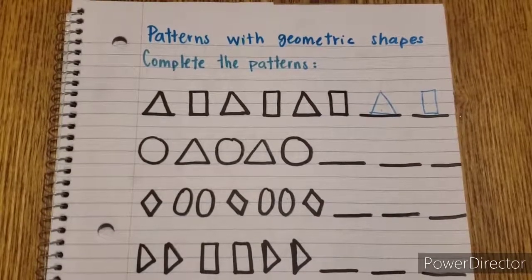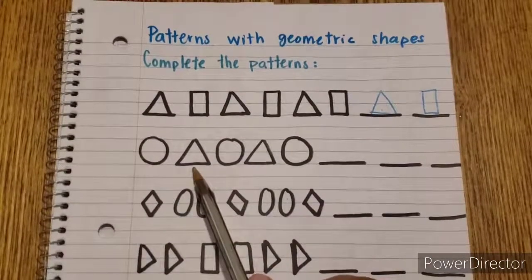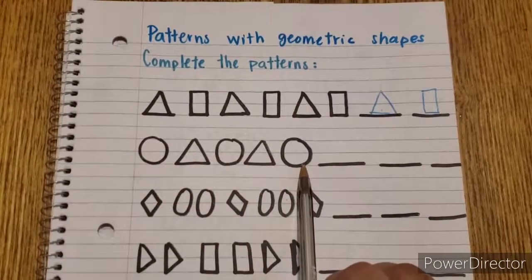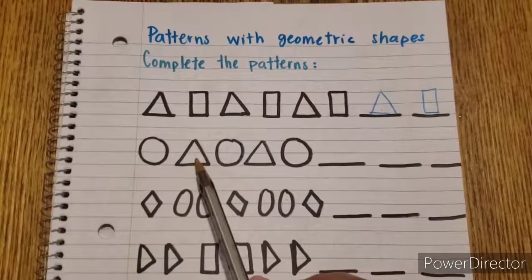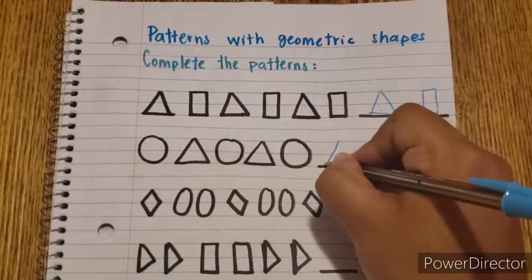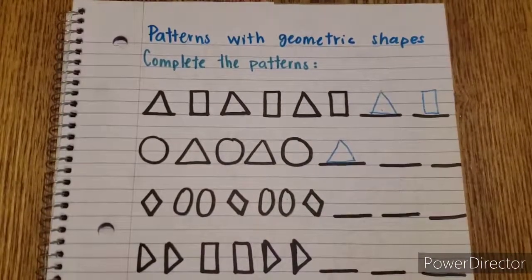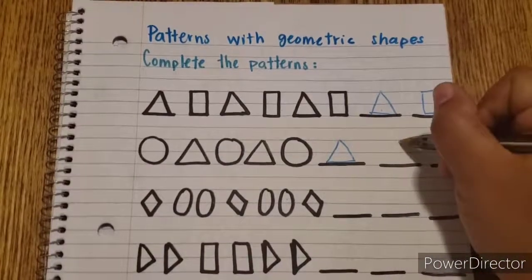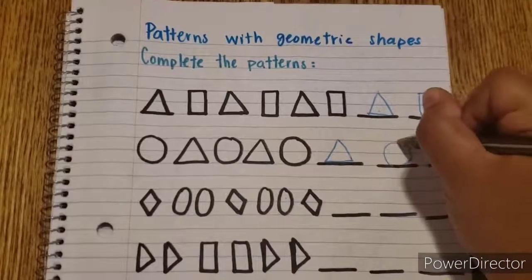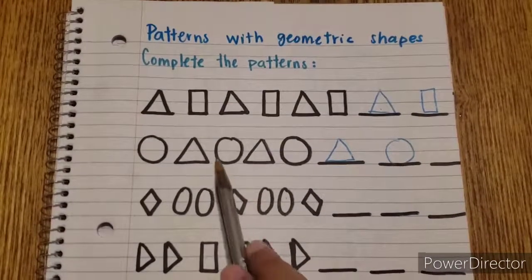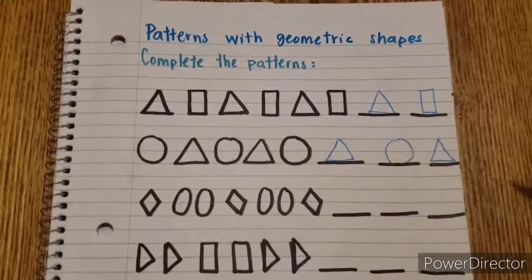Let's look at the next pattern. We have a circle, triangle, circle, triangle, circle. So what goes after the circle? That is a triangle. So we have circle, triangle. What goes after the triangle? That is a circle. What goes after the circle? That is a triangle. So that is it for the second pattern.